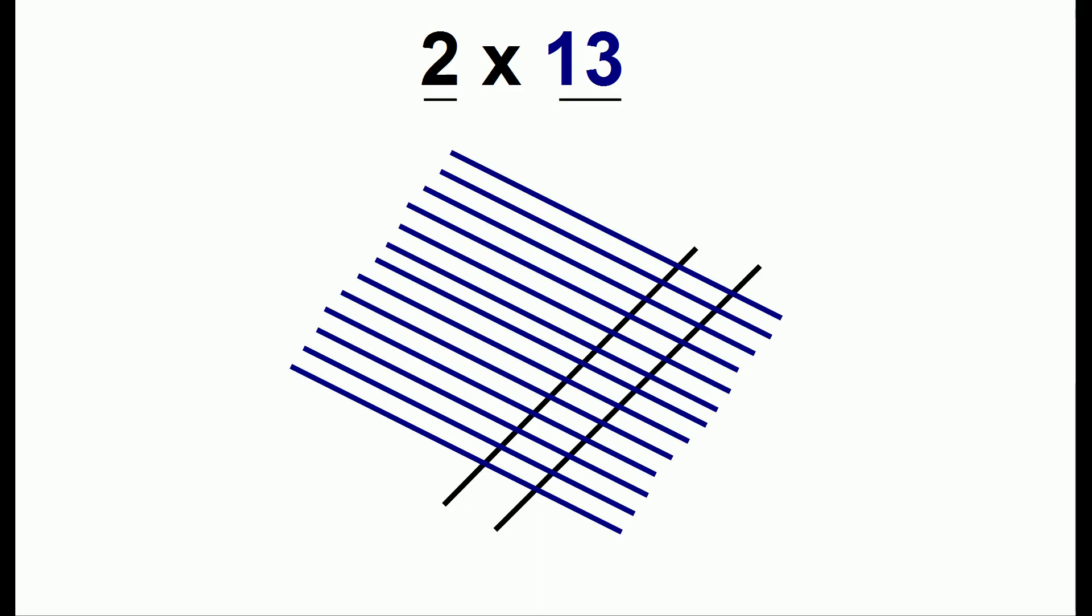We'll illustrate this with 2 times 13. We'll have 2 lines for the 2, and now we'll place 13 lines in the other direction. If you count these dots, there will be 26 dots, and 2 times 13 is 26.